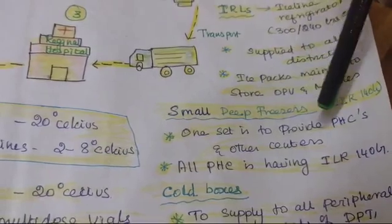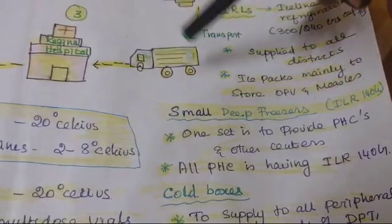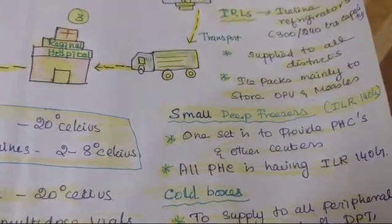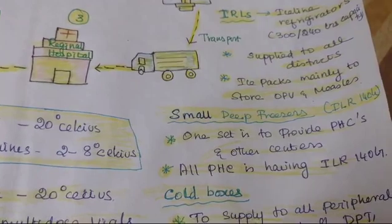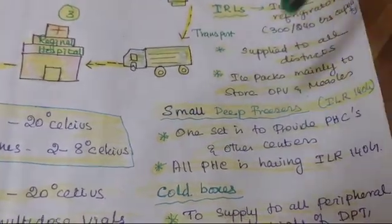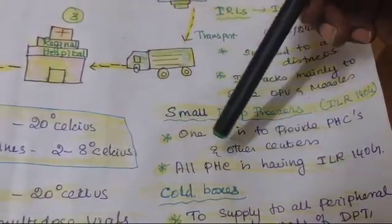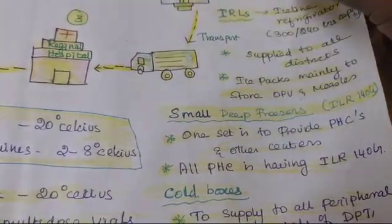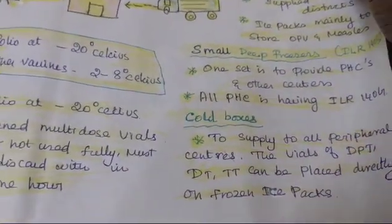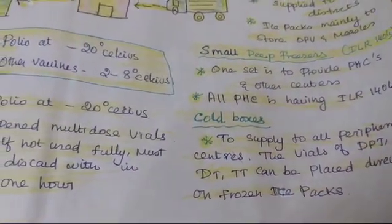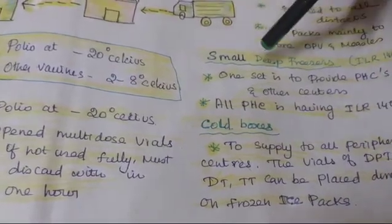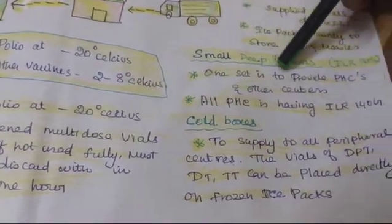This ILR should not be kept near the walls — it must be at least 1 foot away from the wall. Every time you store vaccines, you have to check the temperature. Morning and evening, you have to mark it on a chart.